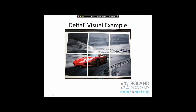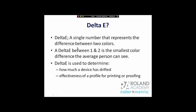Unless you really have a well-trained color eye, you might not see the 20 delta E quite as much in the red crossover area. These two reds should be the same, and they are not. Delta E is a single number that represents the difference between two colors. If we have a delta E of between one and two, that's approximately the smallest color difference that the average person who works with color on a regular basis can see. Delta E is used to determine how much a device has drifted or how different two prints are — it might be a different media causing the difference.